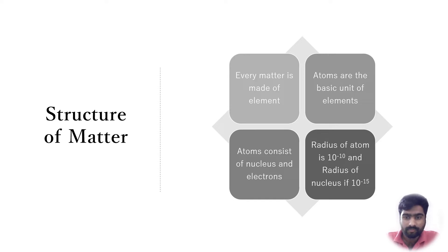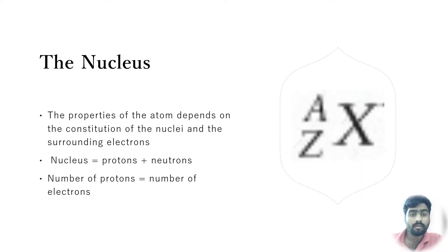The nucleus has a much smaller radius, about 10 to the power minus 15. The properties of the atom depend on the constitution of the nuclei and the surrounding electrons.